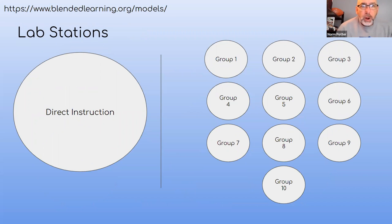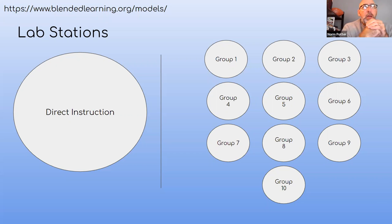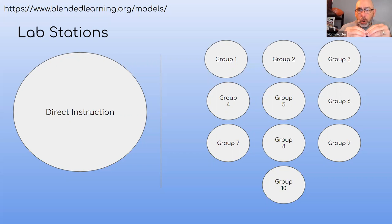The lab rotation model is very typical of a science classroom but not exclusive to science. Think of college biology — lecture Monday, Wednesday, Friday, then a two- or three-hour lab on Thursday. It's the same basic idea: direct instruction to the whole group, then break into partners or groups of three to do the activity. In science they're doing experiments, but you can do the same thing with reading, writing, and social studies. If you have a concept to teach, breaking into partner work is not unrealistic — it's just different than what you might be used to.